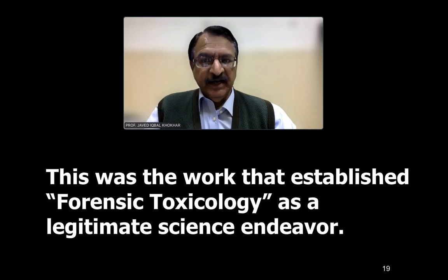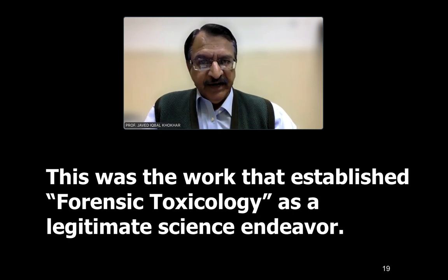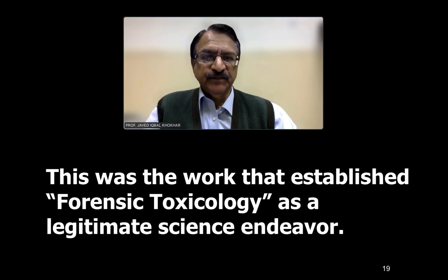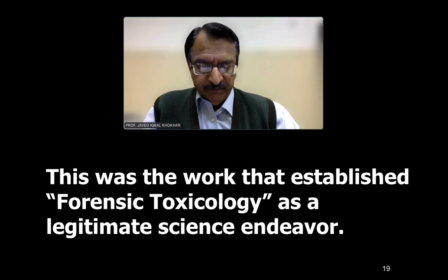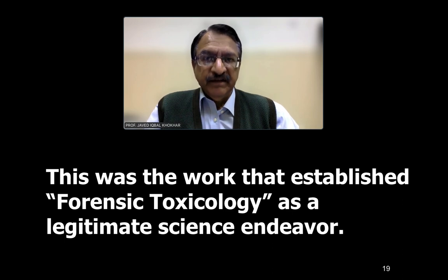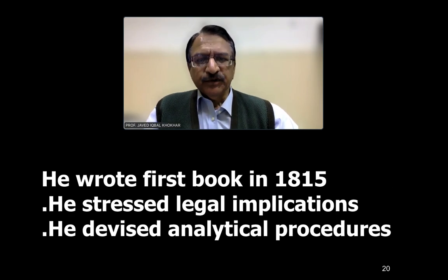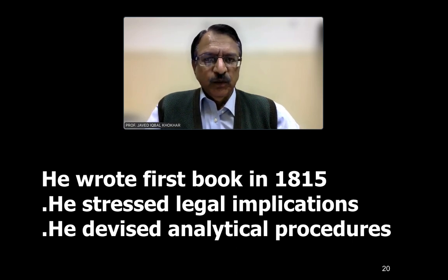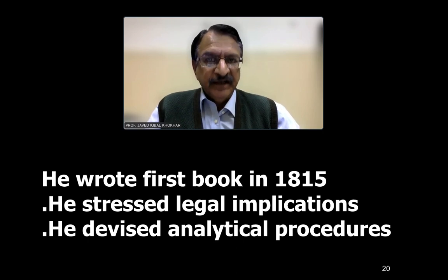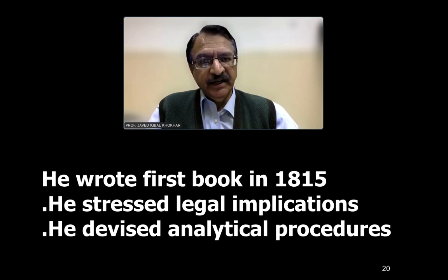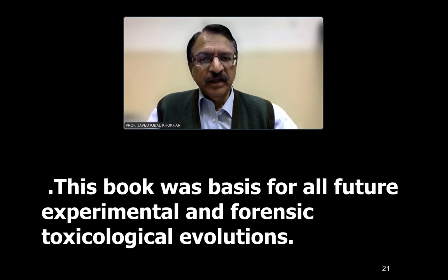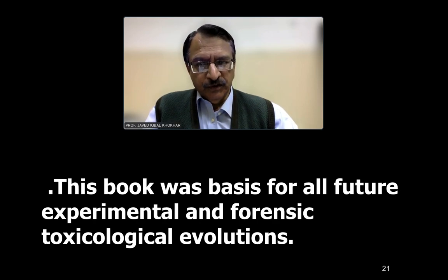It was a legitimate science and a great effort, because he worked hard to get it recognised. He made so much research and detected various poisons. He discovered their effects on the human body and that's how forensic toxicology evolved. He wrote many books, but the first book he wrote was in 1815. In it, he stressed the legal amplification — the legal part — and he devised various analytical procedures for the detection of poisons. This book was the basis for all future experimental and forensic toxicological evolutions.